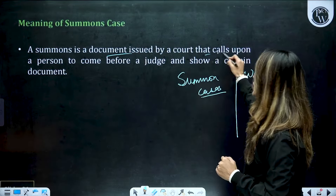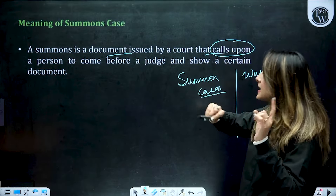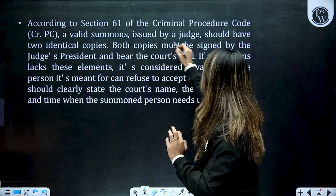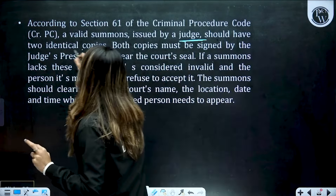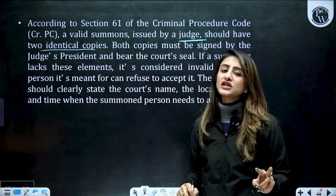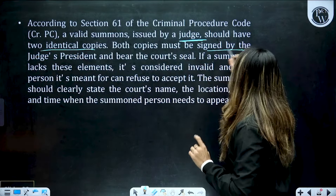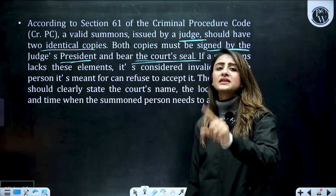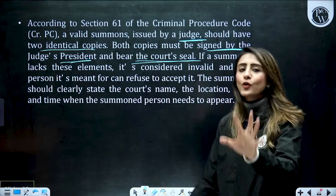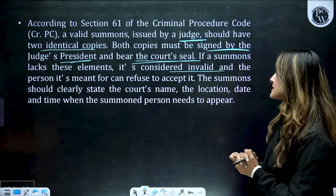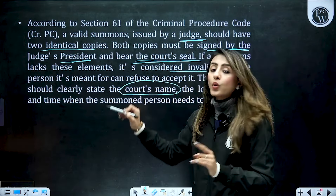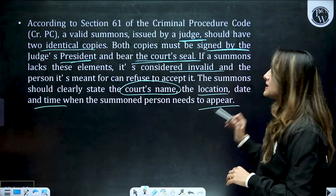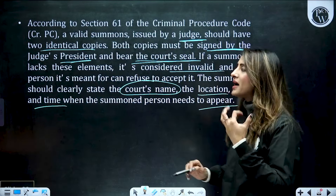According to section 61 of CrPC, a valid summons issued by the judge should have two identical copies. Summons issue karne ke bhi kuch criteria hain — uski do identical copies bheji jaati hain, jo sirf judge issue kar sakte hain. Dono copies pe sign hote hain judge ke presiding officer ke. Saath hi, summons par court ki seal hona bahut zaruri hai — agar summons mein court ki seal nahi hai ya judge president ne usko sign nahi kiya hai, toh woh valid summons nahi hai aur tab aapko court mein jaane ki koi zaroorat bhi nahi hai — toh it is considered as invalid summons. The summons should clearly state the court's name, us court ki location, kis date aur kis time par summons issue kiya hai — yeh saari detail summons ke andar honi chahiye, tabhi woh valid summons hai.